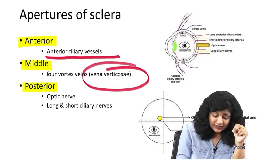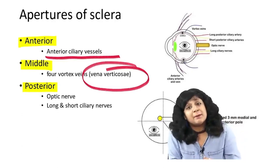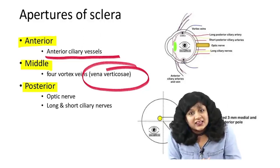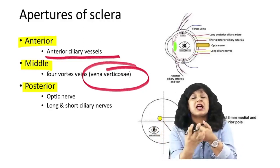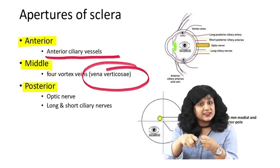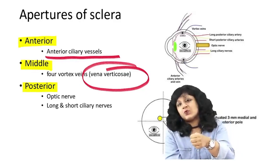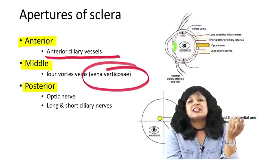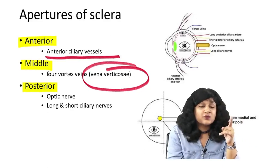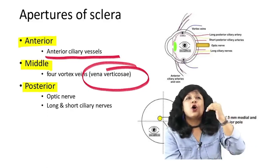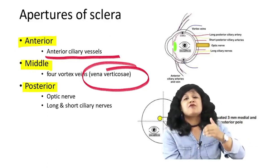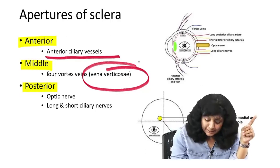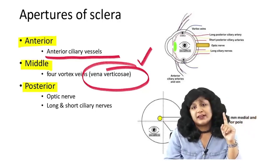The middle apertures are very important — these are the vortex veins. When we study malignant melanoma, the tumors cause compression of these vortex veins, and because of that compression, the aqueous drainage is impaired. So what is happening? Raised intraocular pressure. That is why we always have a glaucomatous stage in tumors — because they are causing compression of these four vortex veins.